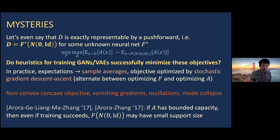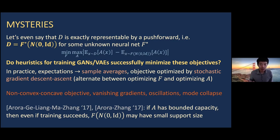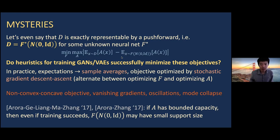From a generalization perspective, replacing expectations with sample averages can cause issues. It was shown by Arora et al. that if the family of discriminators has limited capacity — say a small number of weights — then even if training succeeds in the sense that the training objective is small when expectations are replaced by sample averages, the final generator may have small support size. In other words, the heuristics for training these models aren't exactly aligned with the goal of minimizing the stated objective.